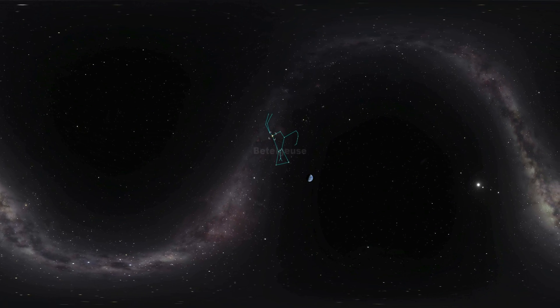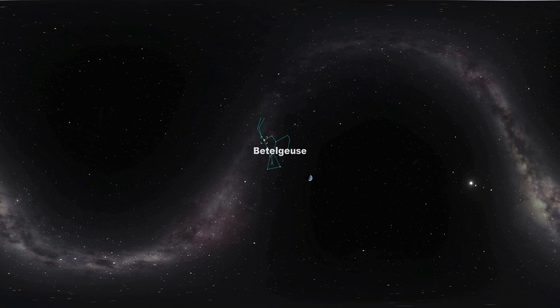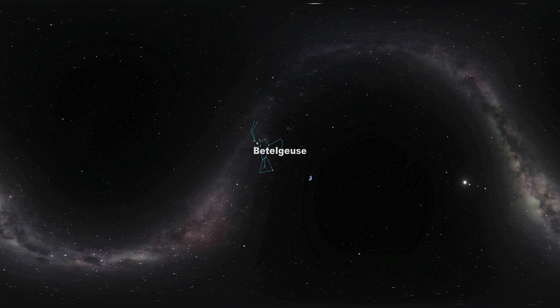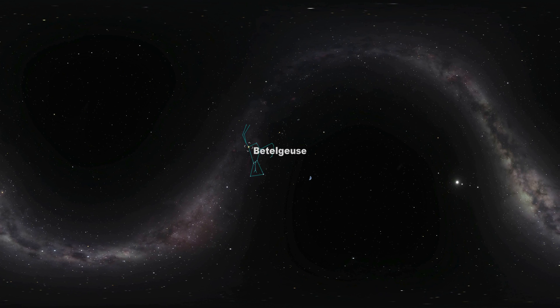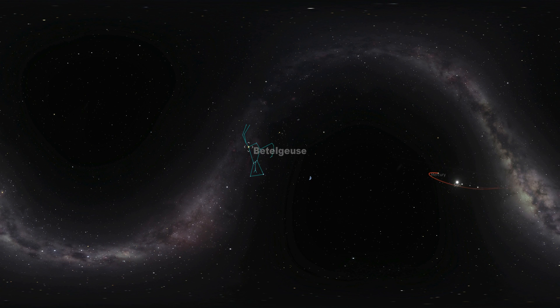One variable that you can see this month is the star Betelgeuse. It is the reddish star that makes up one of Orion the Hunter's shoulders. Normally it is the brightest star in the constellation. You can even see it from a bright city.